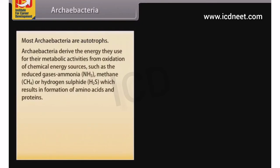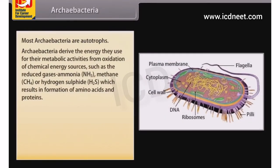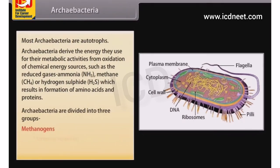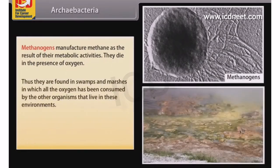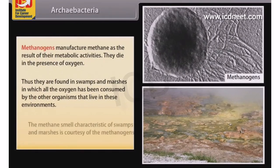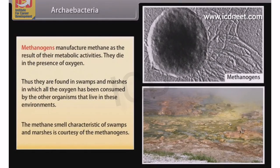Most Archibacteria are autotrophs. They derive energy for metabolic activities from oxidation of chemical energy sources such as reduced gaseous ammonia (NH3), methane (CH4), or hydrogen sulfide (H2S), resulting in formation of amino acids and proteins. Archibacteria are divided into three groups: Methanogens, Thermoacidophiles, and Halophiles. Methanogens manufacture methane as a result of their metabolic activities; they die in the presence of oxygen and are found in swamps and marshes where oxygen has been consumed. The methane smell characteristic of swamps and marshes is courtesy of the methanogens.